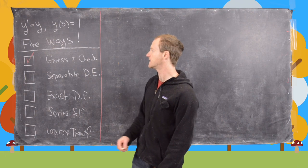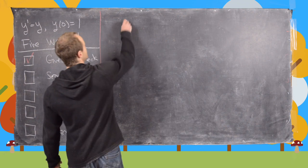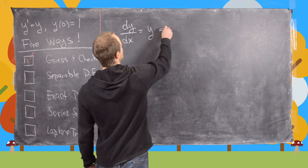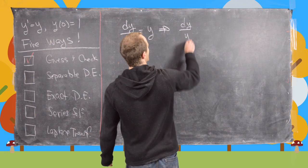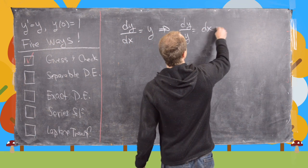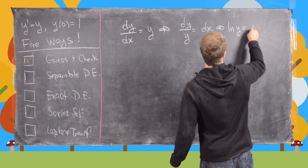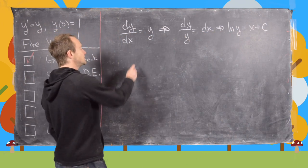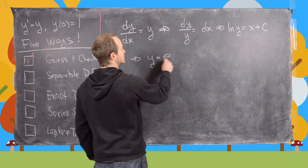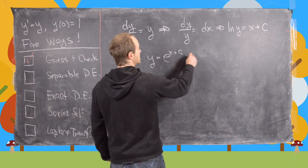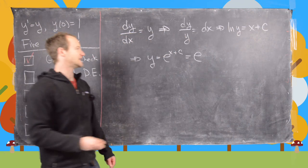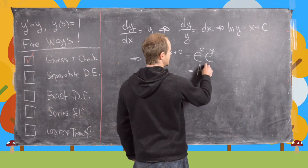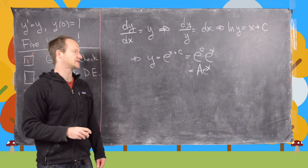The second method we'll use is viewing this as a separable differential equation. Using Leibniz notation, we write dy/dx equals y. That tells us that we can write dy over y equals dx, which tells us that the natural log of y equals x plus some constant c. Exponentiating both sides gives us y equals e to the x plus c. Using exponent rules, that's e to the c times e to the x, which we can write as a times e to the x, where we rename the constant e to the c as a.